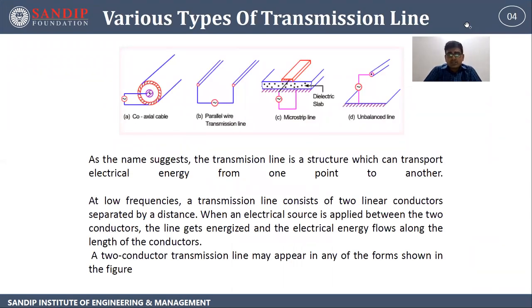Let's start. First are the various types of transmission line. You can see the various transmission lines: coaxial cable, parallel wire transmission line, microstrip line, and unbalanced line.